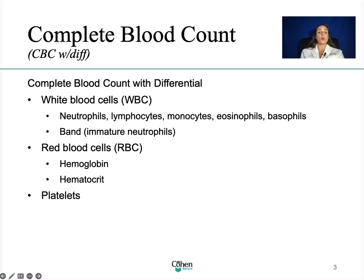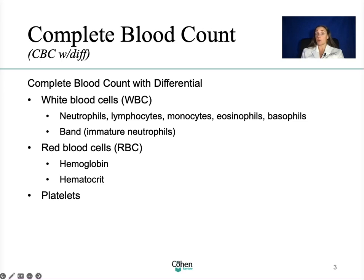Most importantly, what does it mean if the white blood cell comes back elevated or decreased? If there's an elevation of the white blood cell, you're thinking infection. But it could also mean other things — inflammation such as from smoking or medications. Medications like steroids or lithium can cause leukocytosis, or an increase in white blood cells. Exercise is a form of inflammation, so that can cause leukocytosis, as can stress of any sort, and cancer such as leukemia.